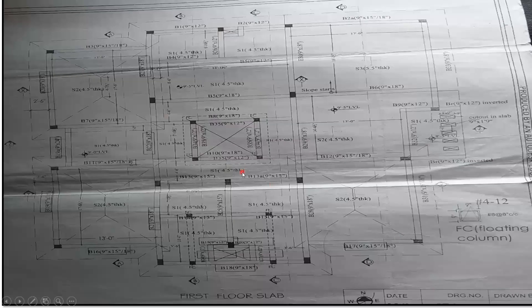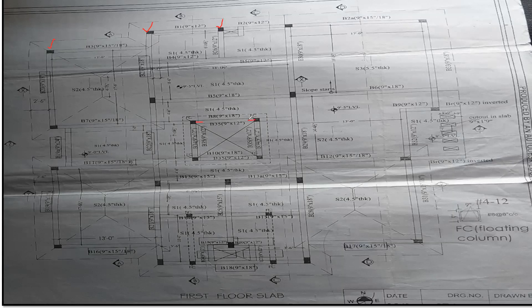Now coming to the practical drawing, it's a bit blurry but you can see everything here. The black dots indicate all the columns I've located. Similarly, observe: one column here, another column here, another column, and another — the same four columns I showed you through that image. You can see something written here: FC stands for floating column. One, two, three, and four — these four are floating columns.